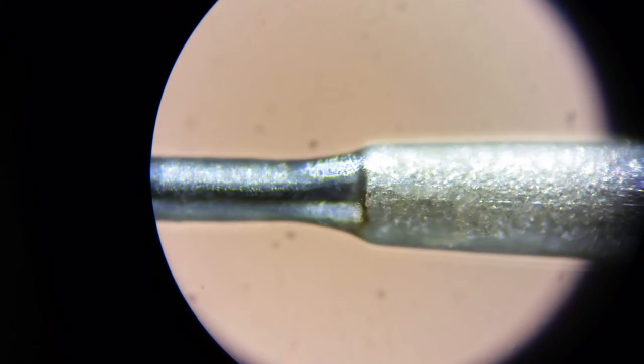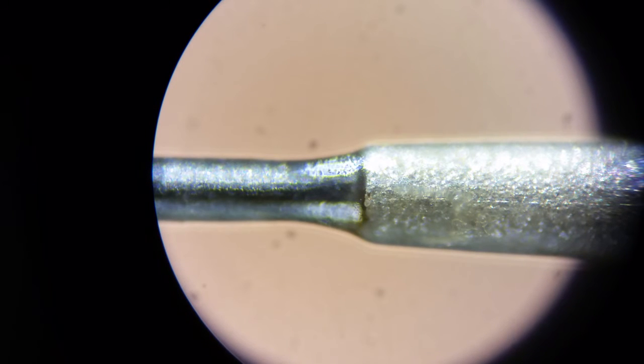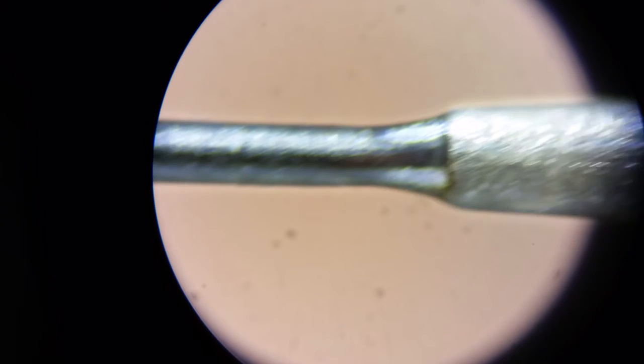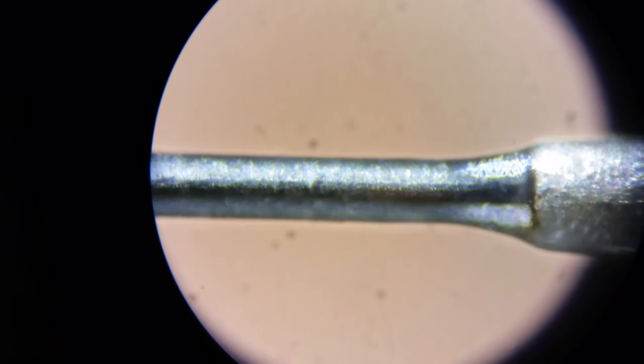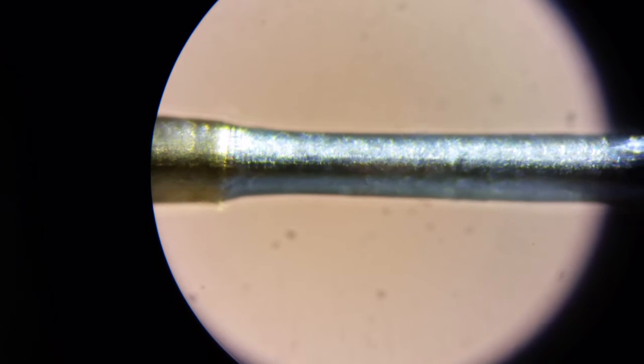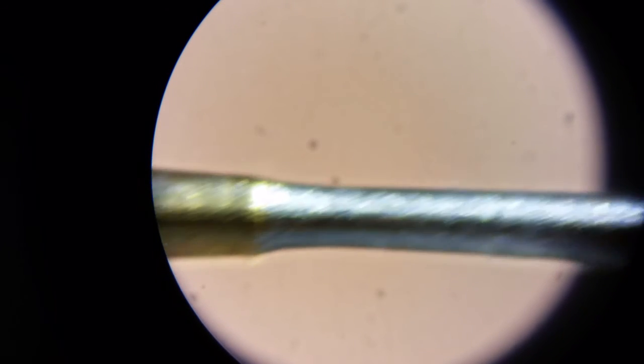So you can see this transition from where it goes from encased in what I assume is a non-conductive sheath of some kind to bare metal. And then if we go out further, we'll notice that the coloration changes.